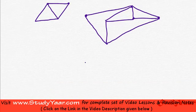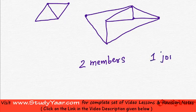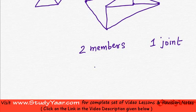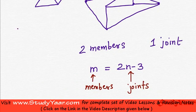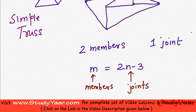Each time we add two members, we also add one joint. So in a simple truss, the total number of members is always m = 2n − 3, where m is the number of members and n is the number of joints.